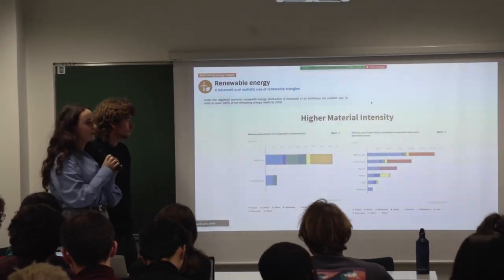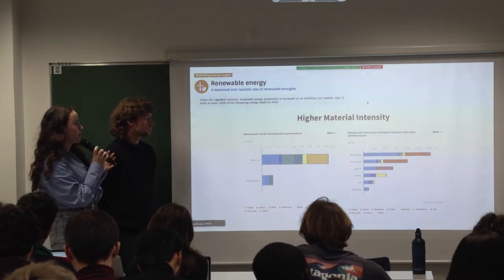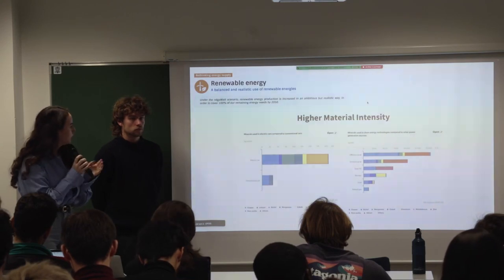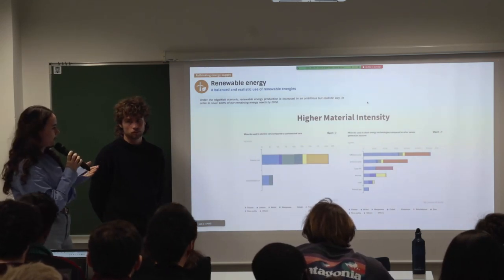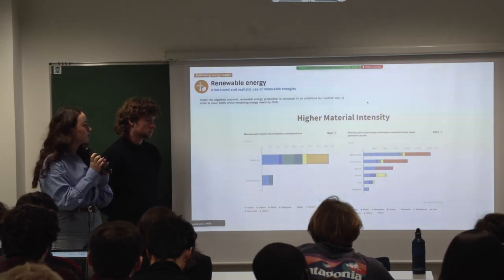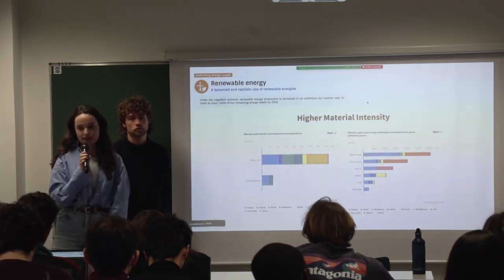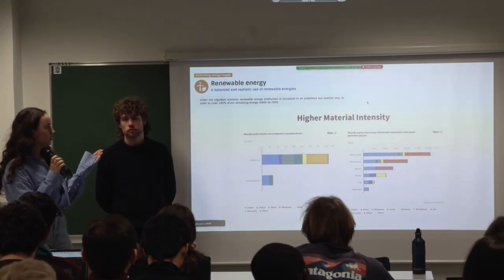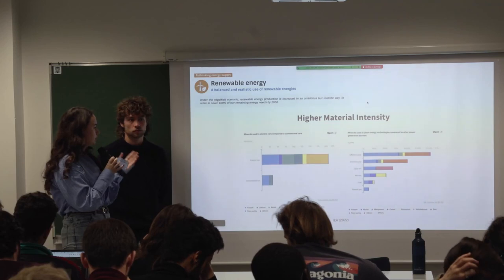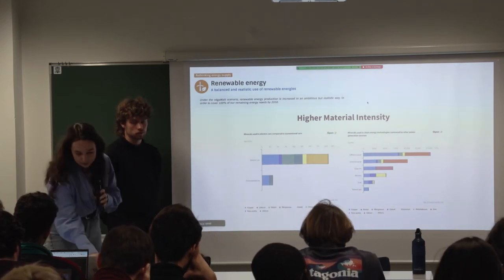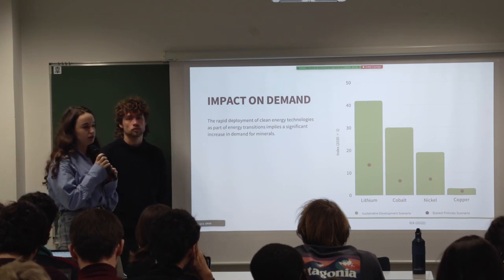I'd like to focus on renewable energy production from a different perspective. As shown in the NégaWatt scenario, renewable production is increased ambitiously but realistically to cover 100% of remaining energy needs by 2050. As we can see from this graph, low-carbon energy sources generally require more minerals to build compared to traditional ones. Offshore wind leads, and within the NégaWatt scenario wind is presented as the main source of electricity in the future, closely followed by onshore wind and solar energy.